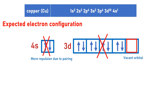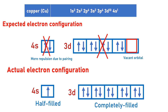A similar thing happens with copper. Although we expect copper to have the electron configuration argon 3d9 4s2, instead, for copper to reduce the repulsion of the 4S subshell and to have a more stable electron configuration — and also because the 4S and 3D energy levels are almost similar in energy — one electron from the 4S moves to the 3D, so the 4S becomes half-filled and the 3D is completely filled, which is a more stable electron configuration.